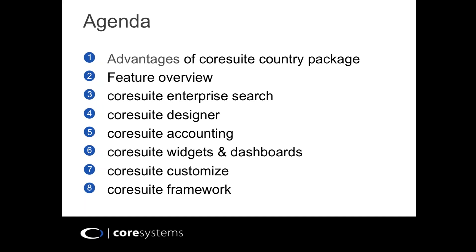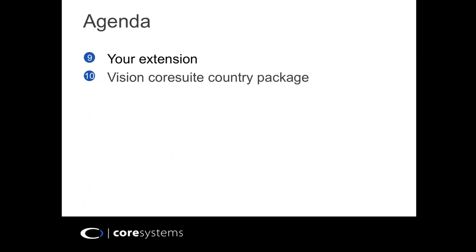Those components are: Core Suite Enterprise Search, Core Suite Designer, Core Suite Accounting, Core Suite Widget and Dashboards, Core Suite Customize, and Core Suite Framework. At the end of the session, I'm going to outline how you can extend SAP Business One using the Core Suite Country Package and your own extensions, as well as create custom solutions and connect them to SAP Business One. I'll also outline the vision for Core Suite Country Package moving forward.